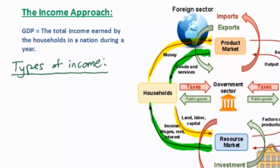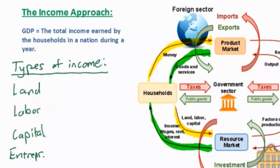By providing their productive resources to firms in the resource market, households can earn several different types of income. The different resources that households provide to firms are land, labor, capital, and entrepreneurship. For land, households receive rental income — the payment households receive for land is called rent. An example is a farmer who owns his own land yet rents it out to a corporation that farms wheat on it. The corporation pays the landowner rental income for the permission to use his land.